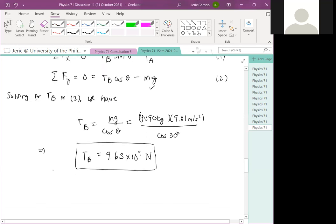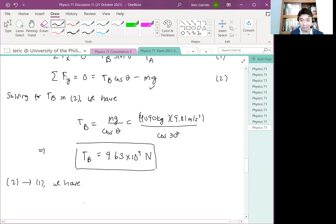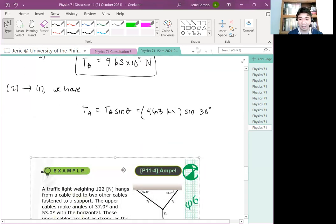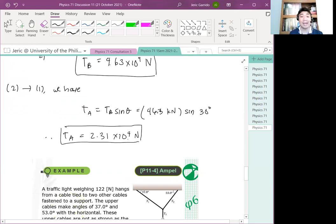Now, substituting equation two to equation one, we have therefore, TA equals TB sine theta, which is equal to 46.3 kilonewtons sine of 30 degrees. And therefore, we will get TA is just equal to 2.31 times 10 to the fourth newtons. That's it. That's your second answer.